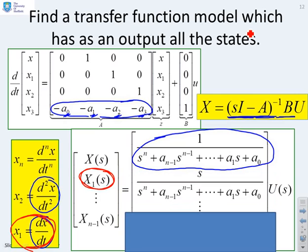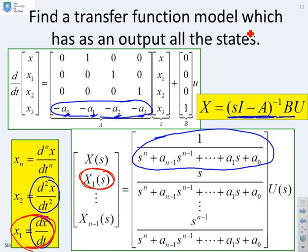Well, the second row gives me x1 of s. And x1 is, you can see down here, dx dt. And therefore, the second row must have s over this denominator, because it's s times x. And if I go all the way to the bottom, then clearly, xn minus 1 is going to have an s to the n minus 1. So you'll notice that in this transfer function here, SI minus a inverse times b, I've got components which have 1 in the numerator, s in the numerator, s squared in the numerator, all the way down to sn to the minus 1 in the numerator. So I can extract all these different powers of s as different rows of this matrix.